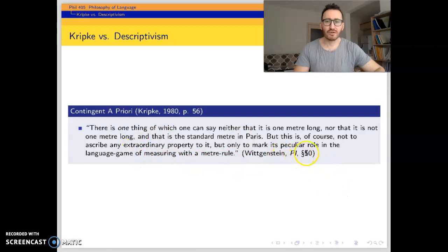In Wittgenstein's Philosophical Investigations, you can find this section. He says, there is one thing of which one can say neither that is one meter long nor that is not one meter long. And that is the standard meter in Paris. But this is of course not to describe any extraordinary property to it, but only to mark its peculiar role in the language game of measuring with a meter rule. You may say that this object is one meter long or it's not one meter long. But when you say that, at least at that time, what you take as the criteria is the standard meter in Paris.